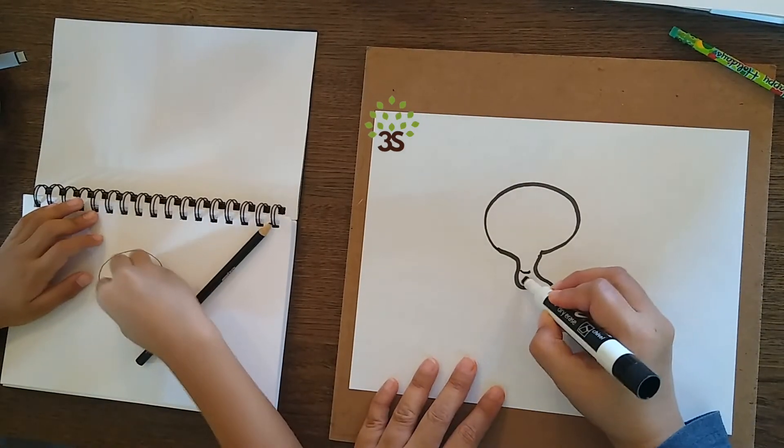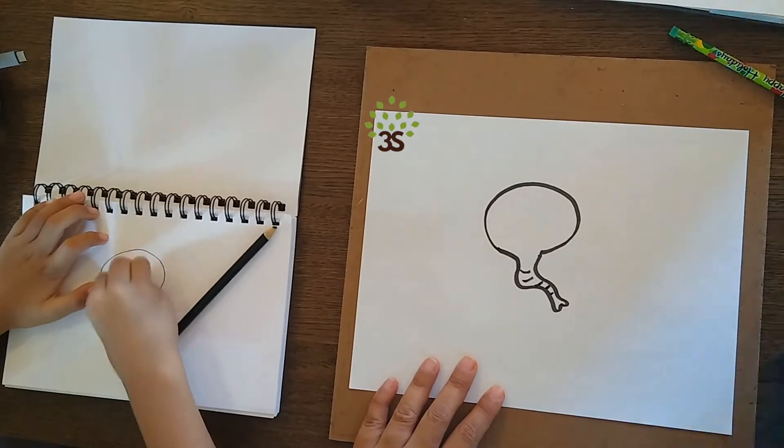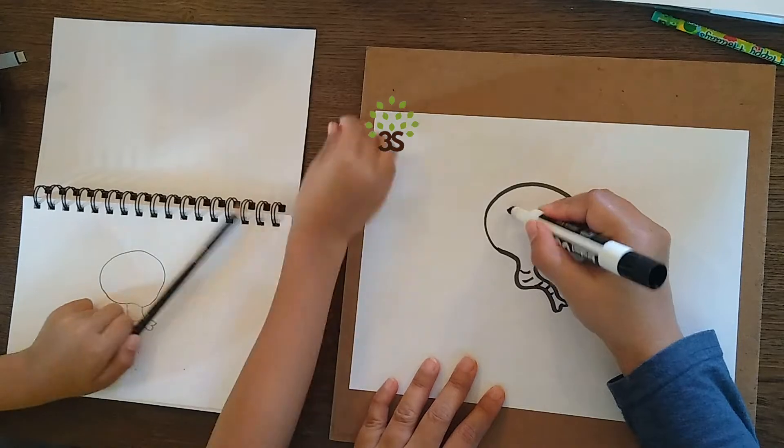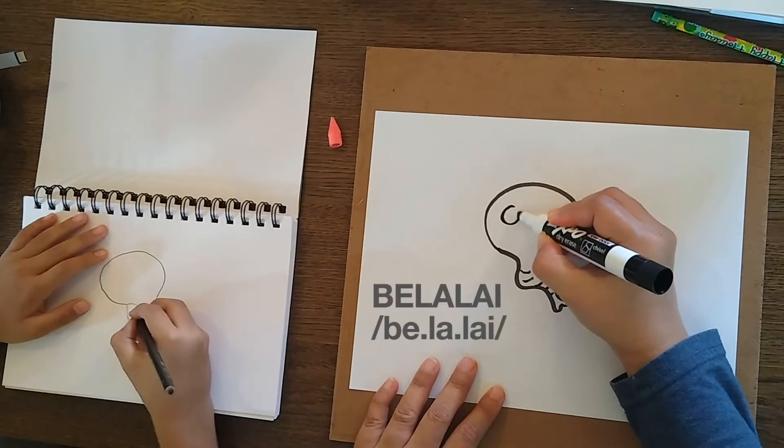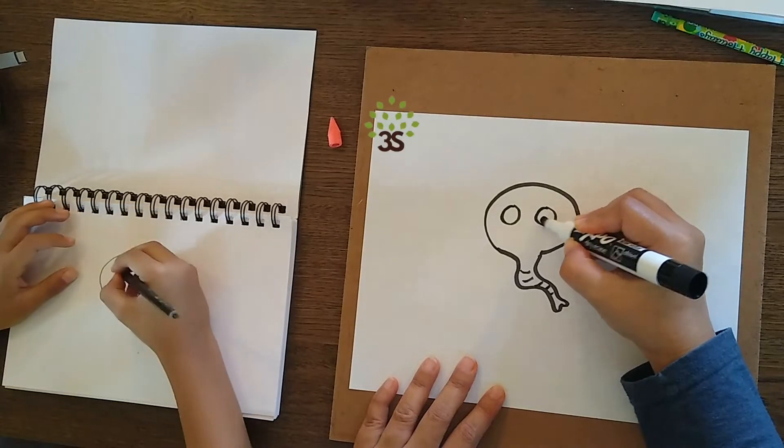Because colored pencils are erasable. Trunk in Indonesia they say belalai. There's the two eyes.